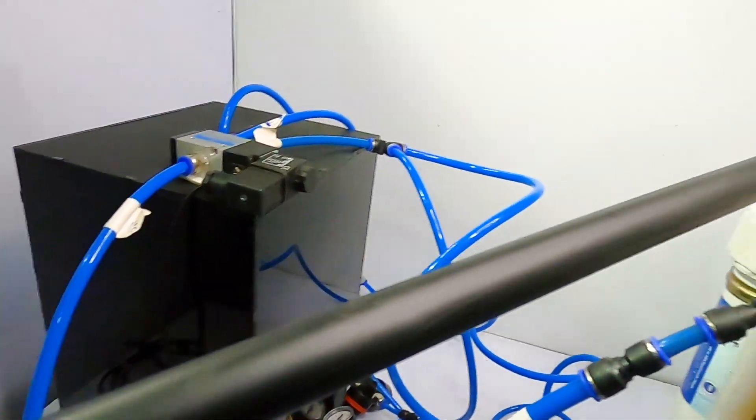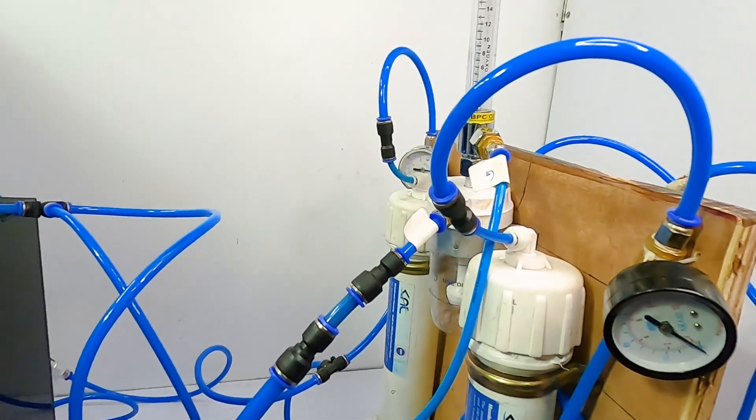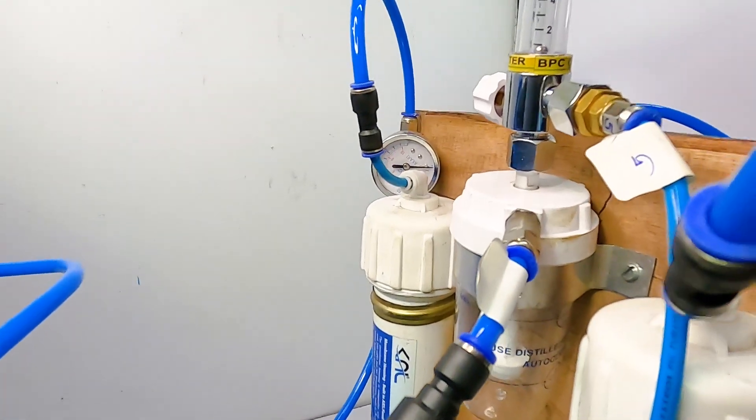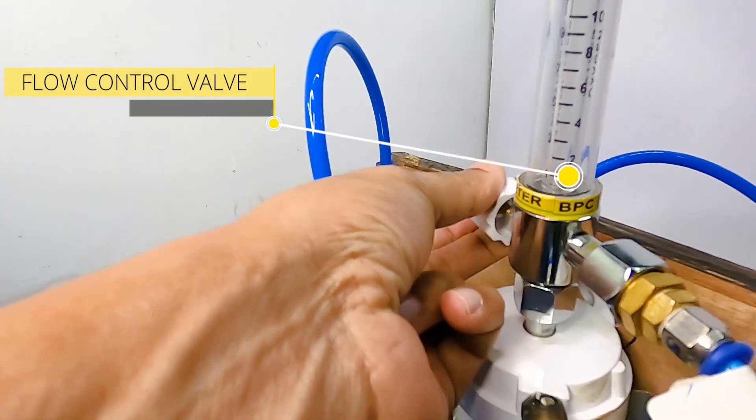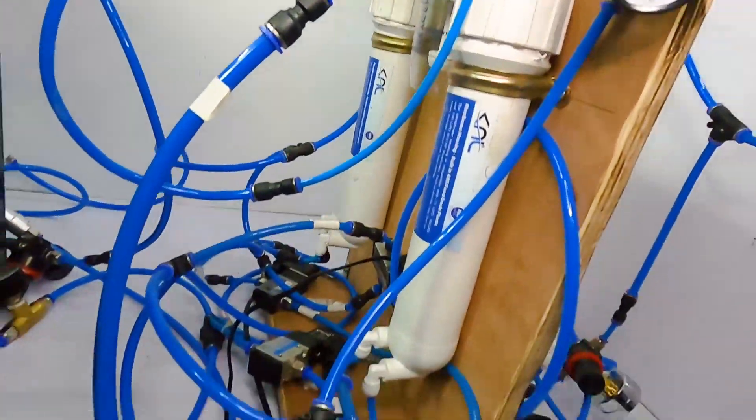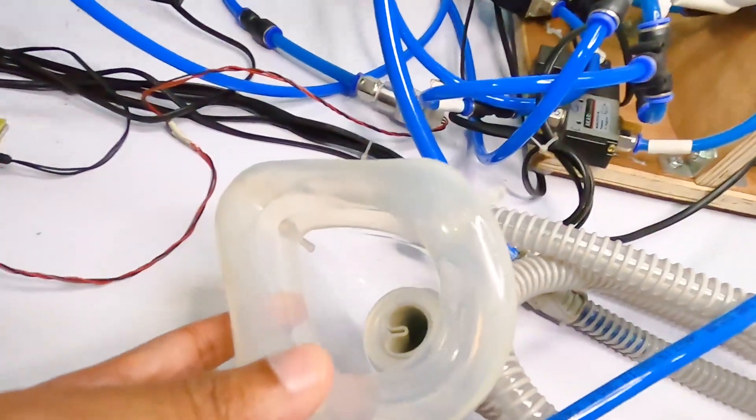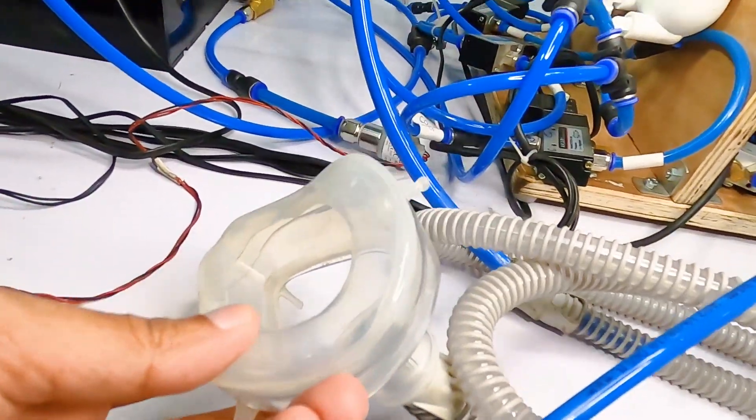So now this air can be passed through a flow control valve. As you can see here, we can use this control valve to control the flow of the output oxygen-rich air, and we have attached an oxygen mask here at the output on the other side of the flow controller.